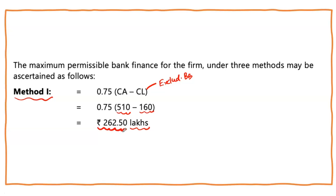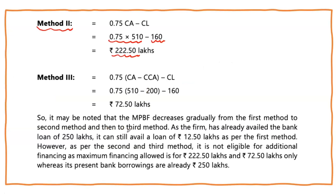Under Method 2, eligible bank finance comes out to 222.50 lakhs. Comparing the two: Method 1 gives 262.50 — it is very liberal; Method 2 gives 222.50 — it is moderate. Method 2 is comparatively more stringent than Method 1.